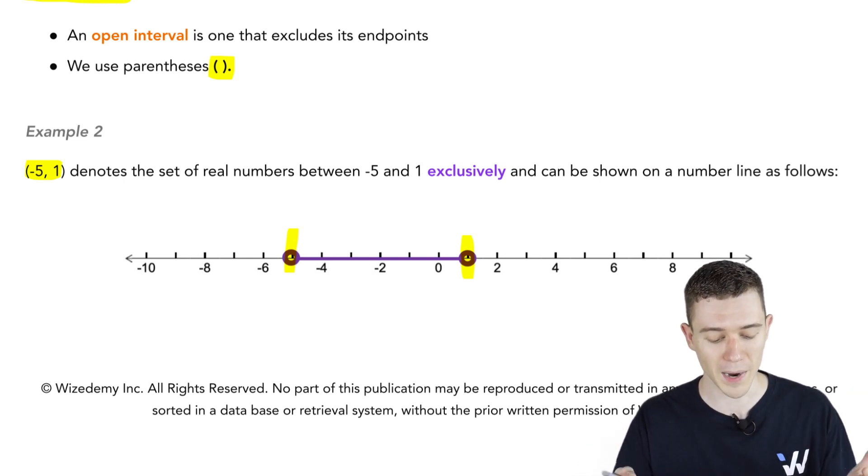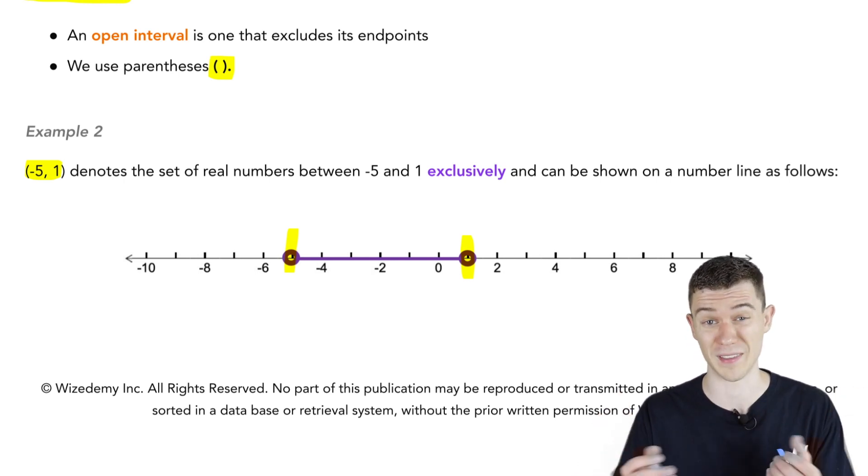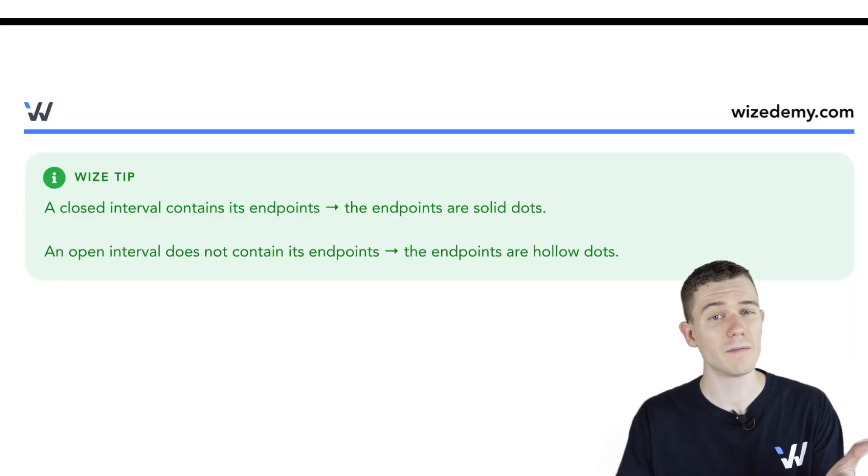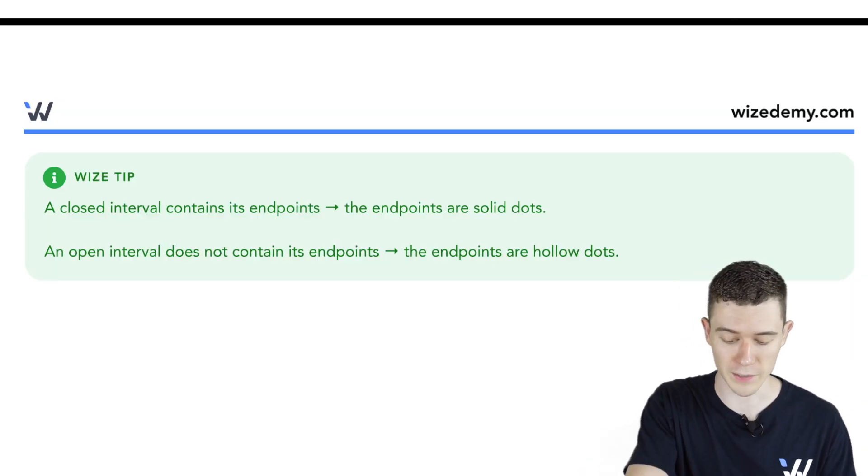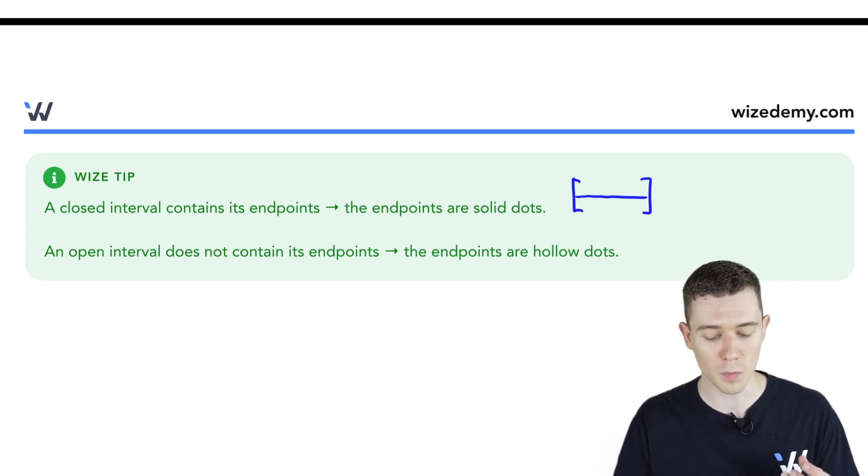And it's denoted minus 5 to 1 in parentheses. So anytime graphically you want to represent a closed interval, use solid dots, or alternatively, you can even use those brackets on the number line. Whereas with open intervals, we use open dots or hollow dots.